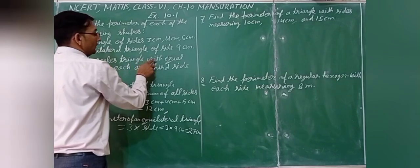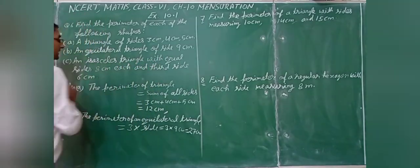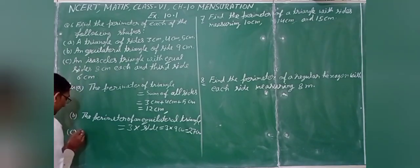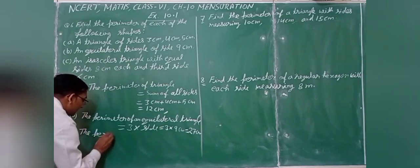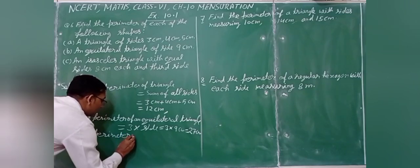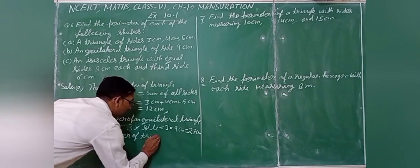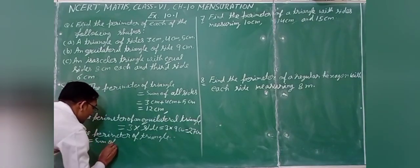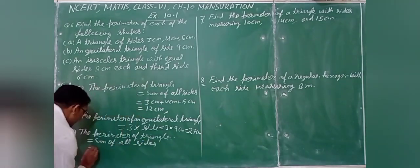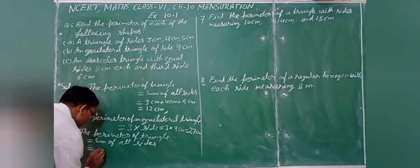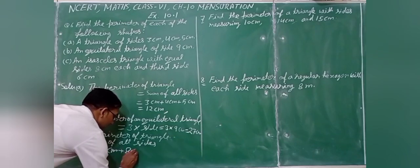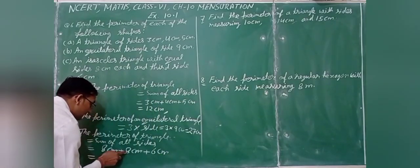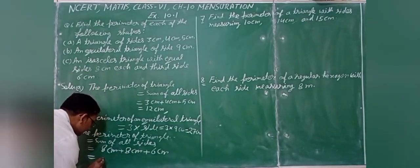Part c: an isosceles triangle with equal sides 8 cm and third side 6 cm. Perimeter of triangle equals sum of all sides = 8 + 8 + 6 = 22 cm.